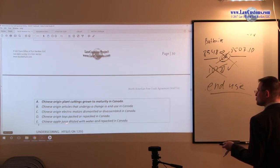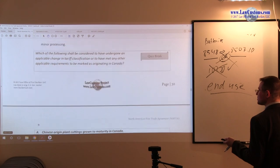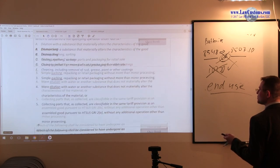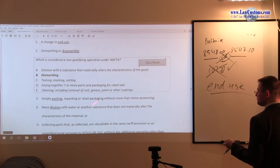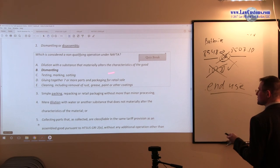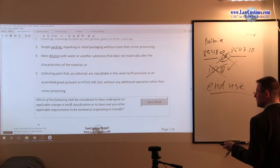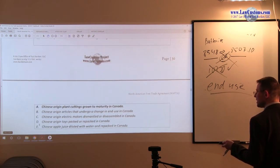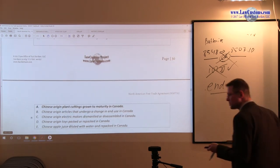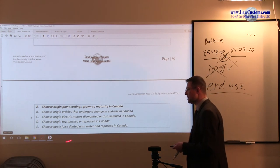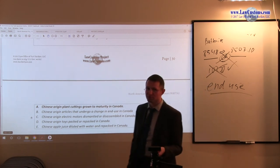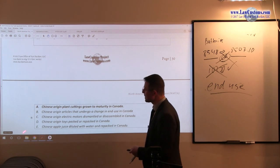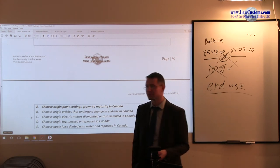Chinese apple juice diluted with water and repacked in Canada. Notice, unlike in this example, dilution, they do not say there is material alteration. If they do say that, they make it explicit. Here, examiner says that dilution took place and no material alteration has taken place. Apple juice remained in apple juice. It is just less concentration, I suppose. Making E is also an incorrect answer choice.